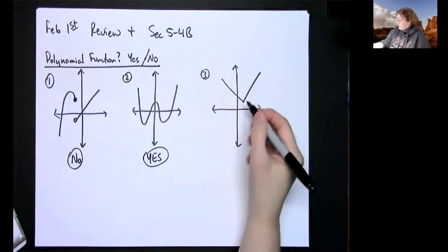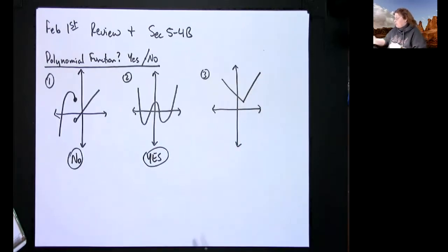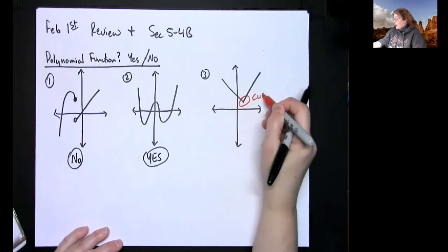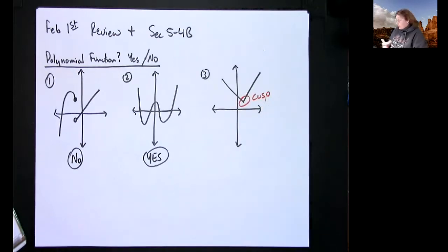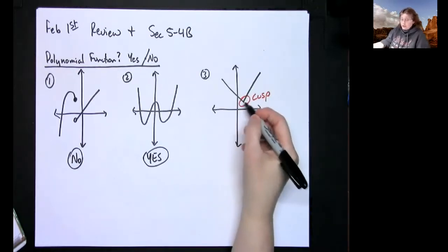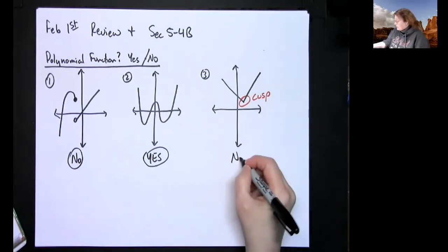Now this one I can draw without lifting my pencil, however there is that sharp point, or as we identified in an earlier lesson, we called that a cusp. So as long as it's got a sharp point then it cannot be a polynomial function.